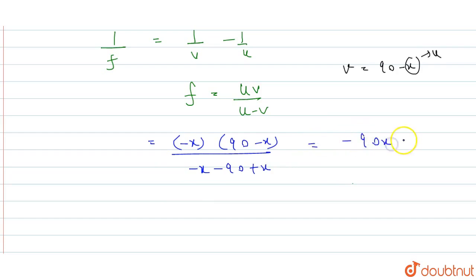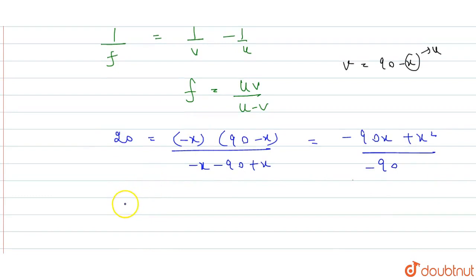We get minus 90x plus x square upon minus 90. Now this equals the focal length. The focal length given is 20, so if we cross multiply, what will it be?